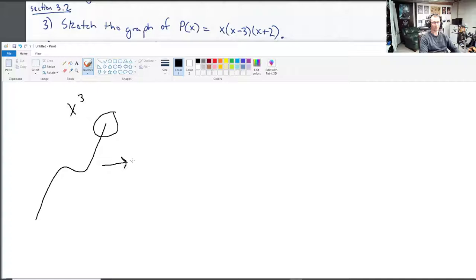It definitely has end behavior like this. As x goes to infinity, y goes to infinity. As x goes to negative infinity, y goes to negative infinity as well. It definitely has this overall shape. The only question is, what about the wiggle?